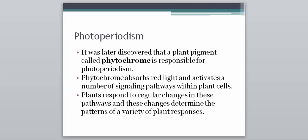It was later discovered that a plant pigment known as phytochrome was responsible for photoperiodism — that's going to be an important word to know. Phytochrome absorbs red light and will activate a number of signaling pathways within plant cells. These pathways involve the hormones we talked about and help regulate plant responses. Phytochrome signals to the plant what it needs to do based on the amount of light or darkness present.